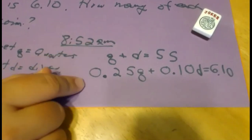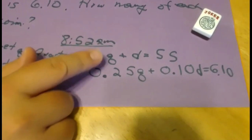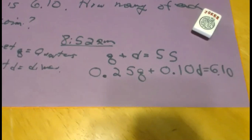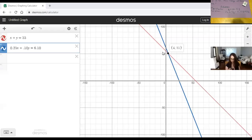Remember that when you use Desmos, Q and D become X and Y. So if we go to Desmos, we put the equations in with X and Y. We put the two equations in, see where they cross — and this is important.